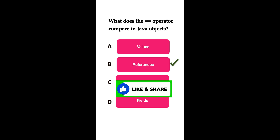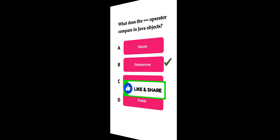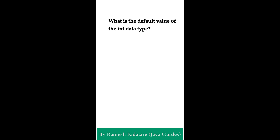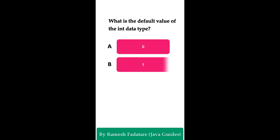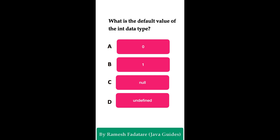The equals() method is used to check the actual content of two objects and can be overridden in your classes to compare object properties. Here is one more question: What is the default value of the int data type? Option A: Zero, Option B: One, Option C: Null, Option D: Undefined. You have five seconds to answer.